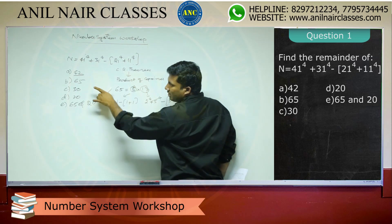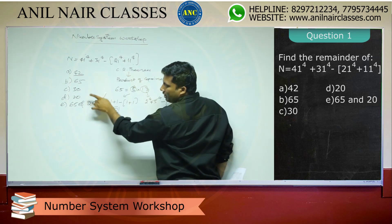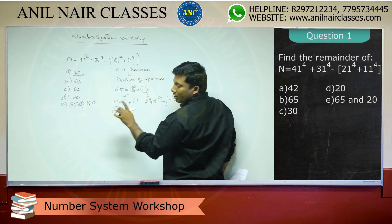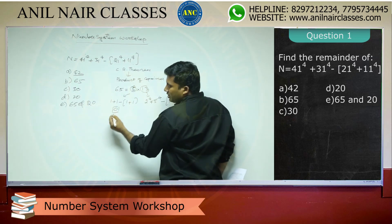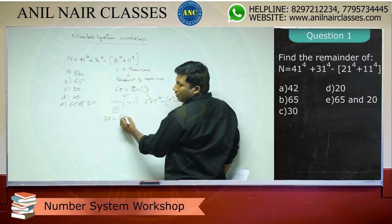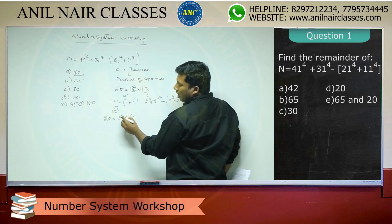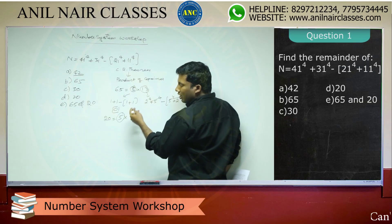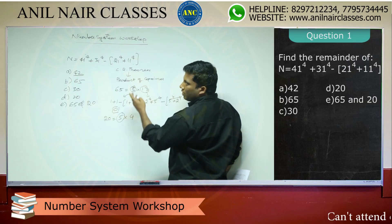It is divisible by both 5 and 13, so the answer will be either option B or option E. Option E has value 20. Since 20 is 5 times 4, and we already verified divisibility by 5, we now check divisibility by 4.